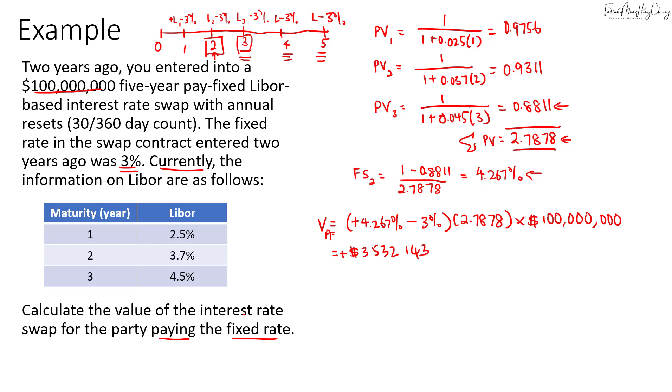So this will be the value of the interest rate swap to the party that is paying the fixed rate. Now, if the exam asks you what is the value then of the party that is receiving the fixed rate, the party that's receiving the fixed rate will simply have a value that is the negative of the pay fixed payer. So there'll be negative $3.53 million. So just put in a negative sign.